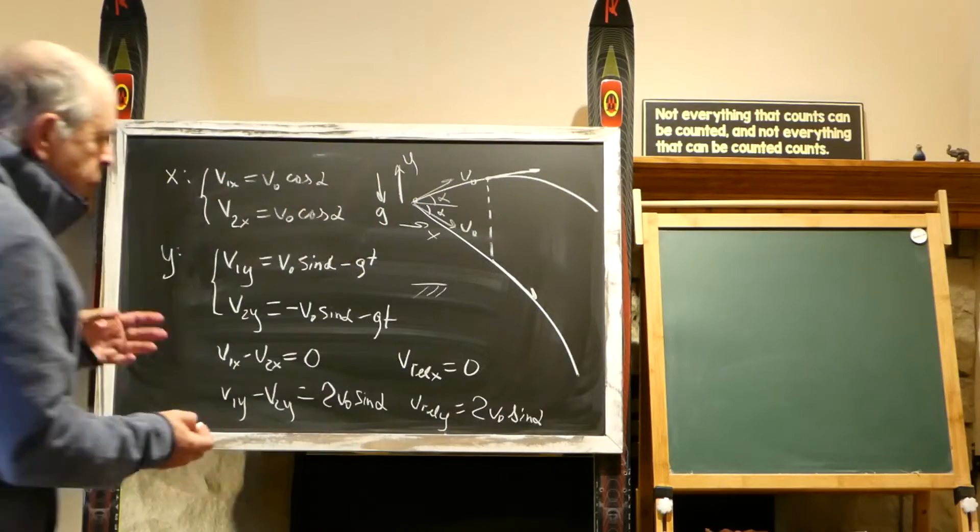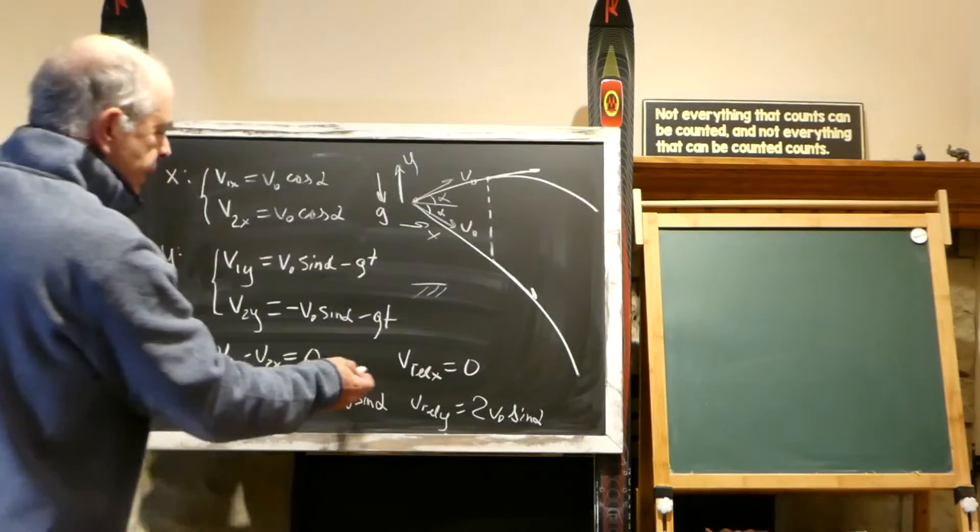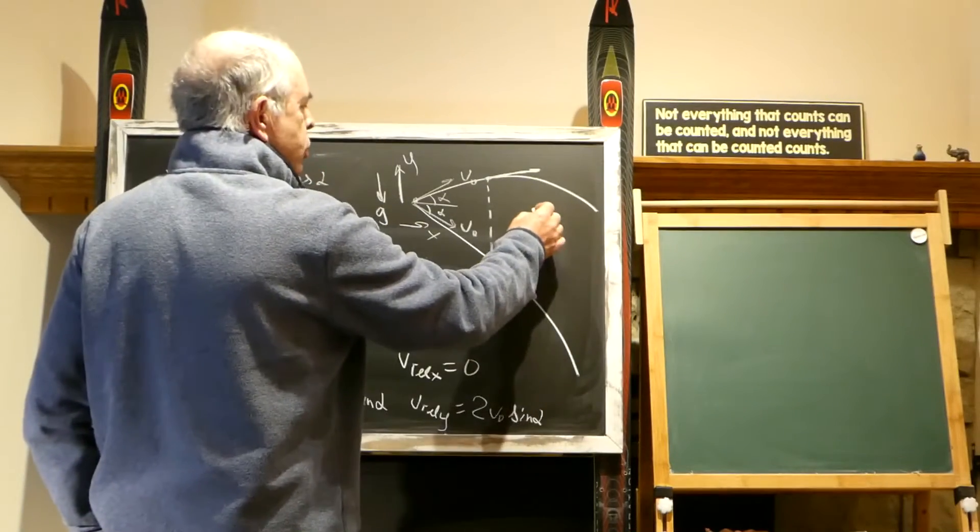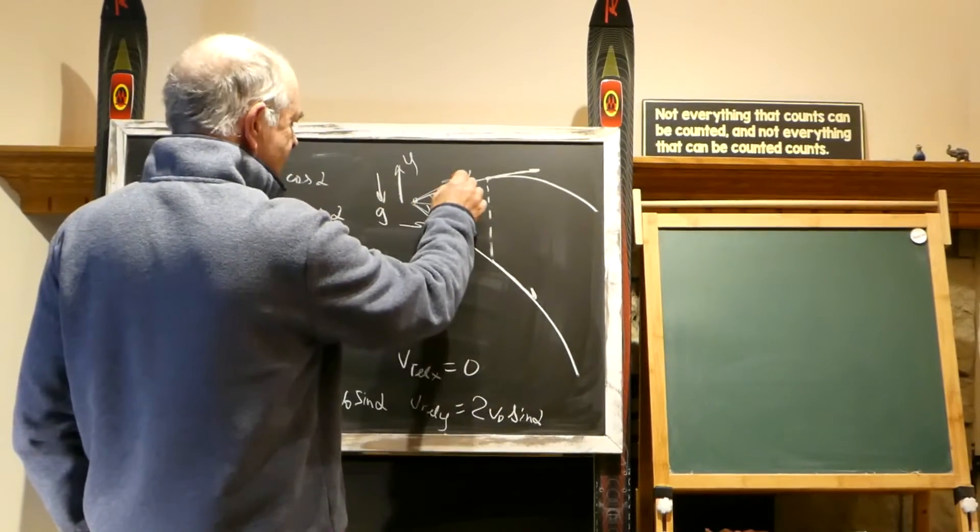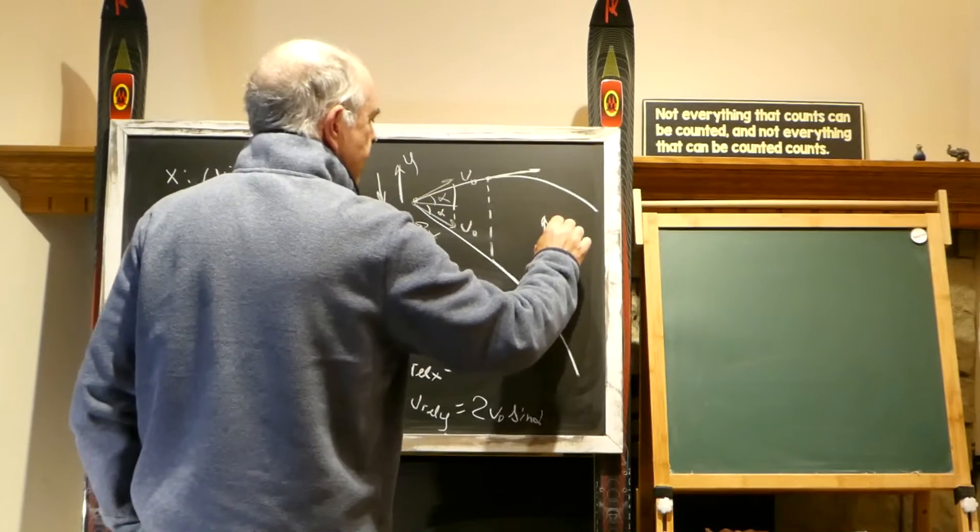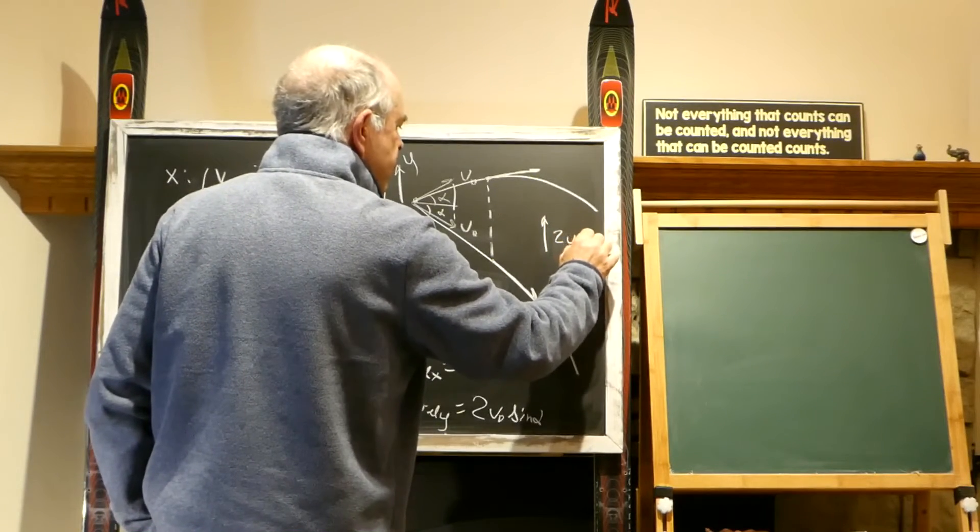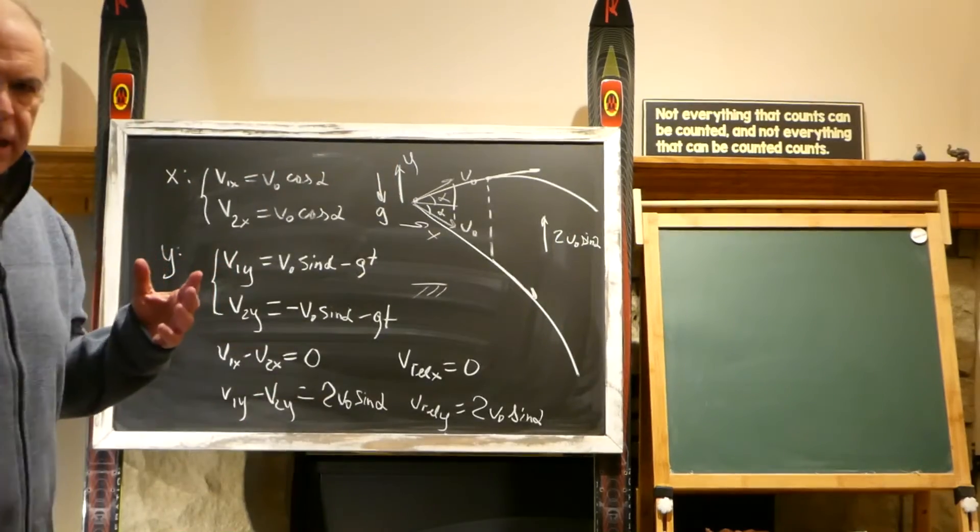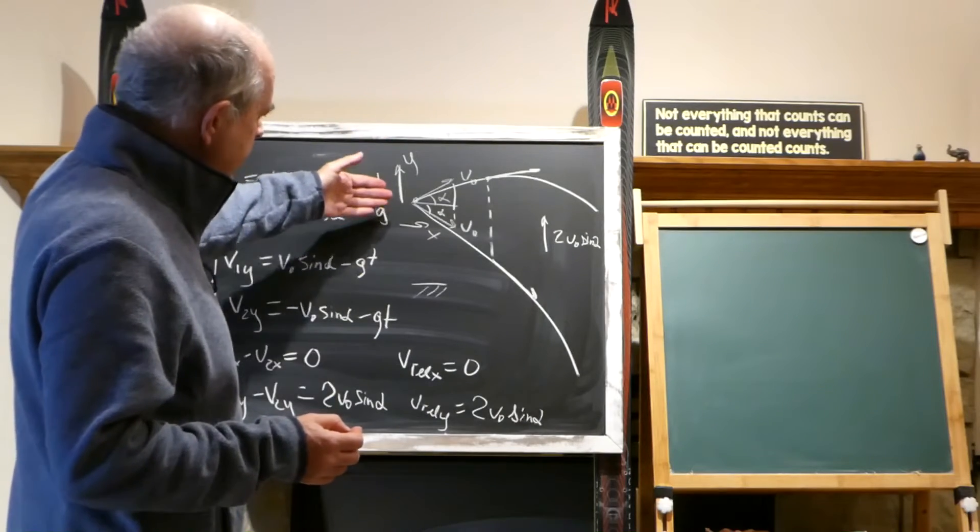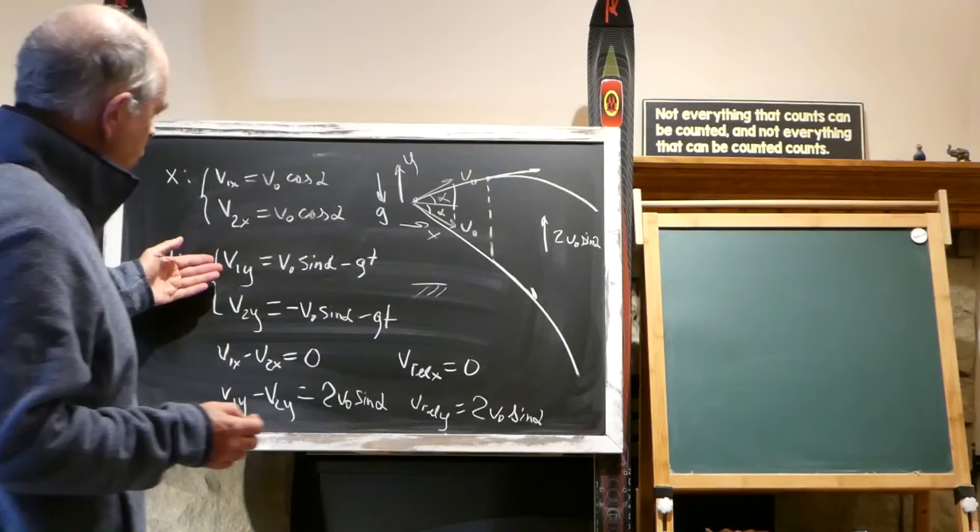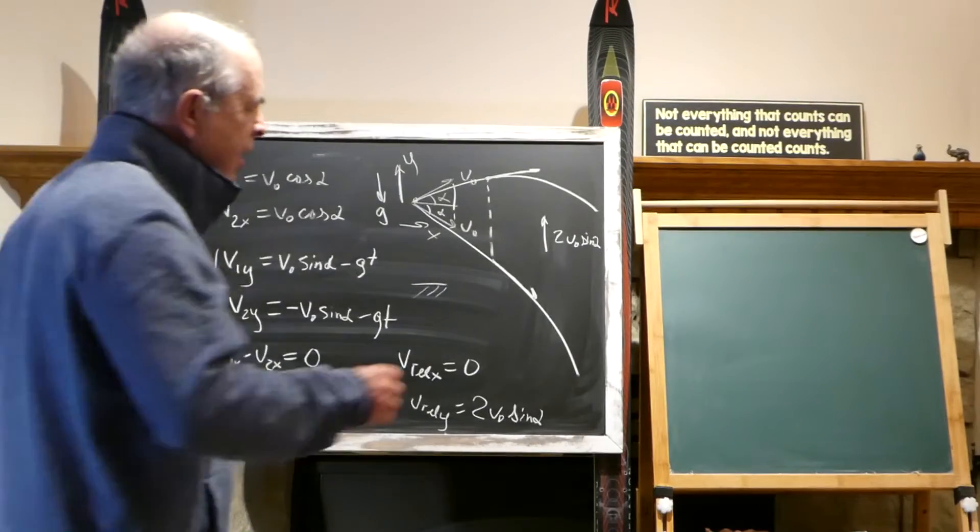So what we will have, we will have this relative speed has no component in this direction and has this double component in this direction. So this would be this vector, and this vector would be 2v0 sin alpha. And of course, it makes perfect sense because both bodies are falling down with the same acceleration g, so the speed is decreasing the same way.